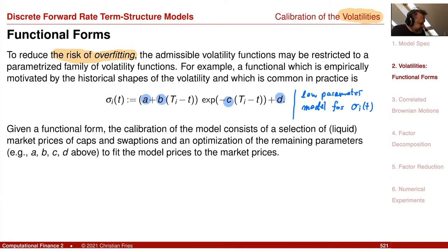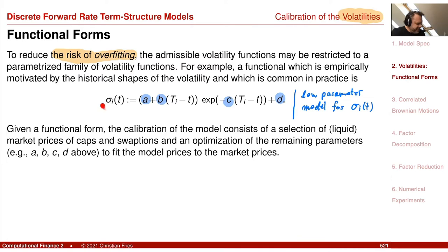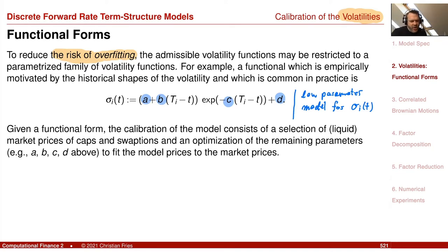With the sigma parameters, it's sometimes possible to match every swaption observed on your time discretization grid by choosing these parameters — unless there is arbitrage in the market or data issues. But if you use a low-parameter model, it's not possible to match every financial product since you have fewer parameters than products. You could instead match them in a least-squares error sense — minimizing some error norm, such as the difference of market price and model price, or market implied volatility and model volatility.